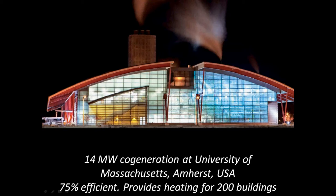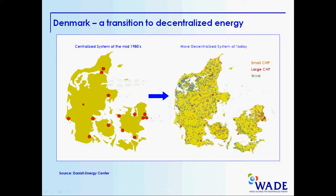In Denmark, there's been a huge transition from centralized to decentralized energy. In the mid-1980s there were a few large-scale power plants, and that has largely shifted to many wind turbines and community-scale combined heat and power projects. Today, Denmark gets over 50% of its electricity from decentralized sources.